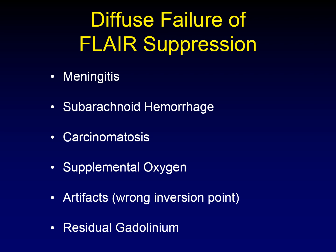Subarachnoid hemorrhage — focal subarachnoid hemorrhage can cause a failure of FLAIR suppression focally, and diffuse or extensive subarachnoid hemorrhage has the potential to do it diffusely. Carcinomatosis: if it's focal, it will cause a problem focally; if you have diffuse leptomeningeal carcinomatosis, small amounts of protein will leach out of the injured meninges into the CSF and cause a failure of FLAIR suppression.